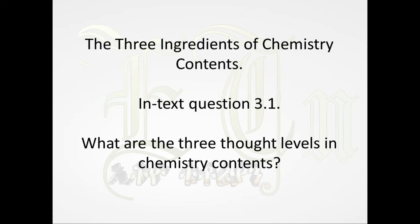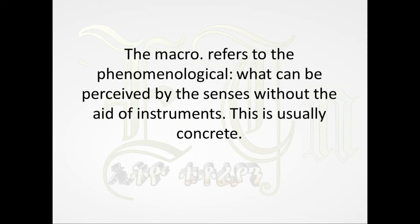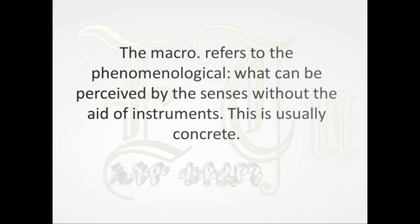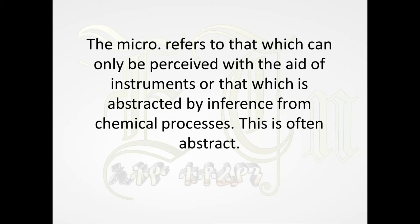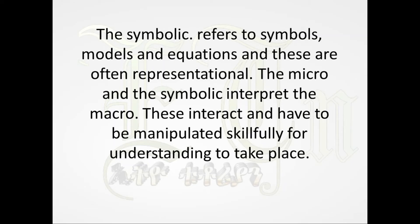The Three Ingredients of Chemistry Contents. In-text question 3.1: What are the three thought levels in chemistry contents? Chemistry, like other science disciplines, operates at three thought levels: the macro, the micro, and the symbolic. The macro refers to phenomenological aspects — what can be perceived by the senses without instruments; this is usually concrete. The micro refers to what can only be perceived with instruments or abstracted from chemical processes; this is often abstract. The symbolic refers to symbols, models, and equations, which are representational.